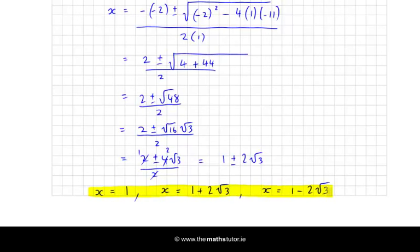So that was a fairly straightforward question. Just use trial and error to find a root by subbing in. Once you've found it, then form your factor, divide it in, get a quadratic factor, and then use the minus b formula to solve that. And we have the three roots. So that's all for this video. Thanks for watching. Bye for now.